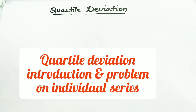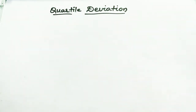Hello listener. We have discussed the first method of dispersion. The second method is quartile deviation. What do you mean by quartile? Quartile's general meaning is quarter — you are dividing into different quarters. Quartile means 25 percent of your data, meaning one-fourth part.